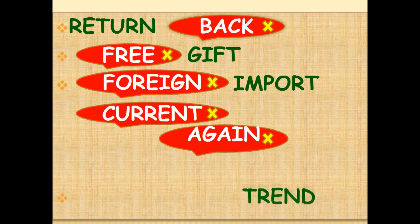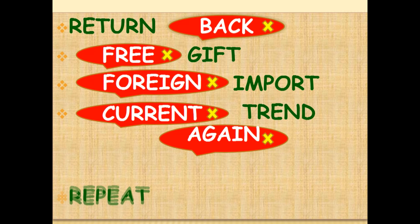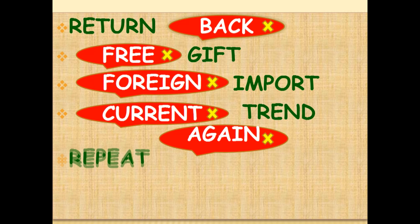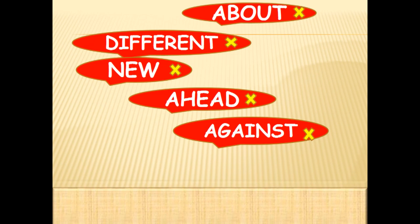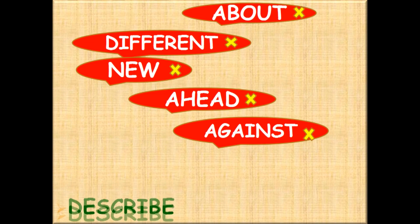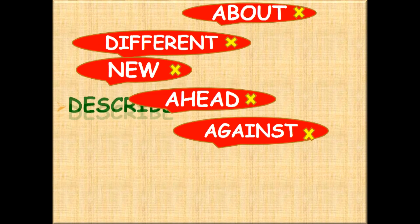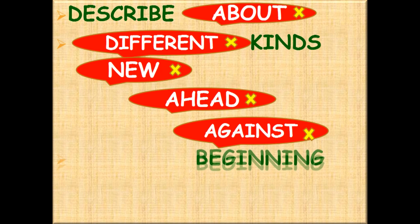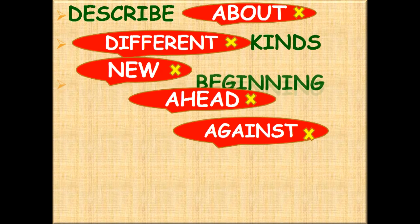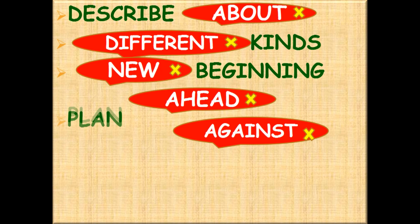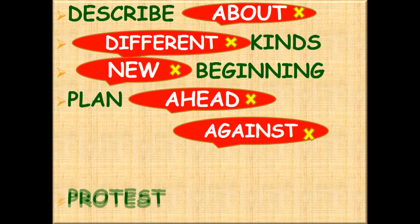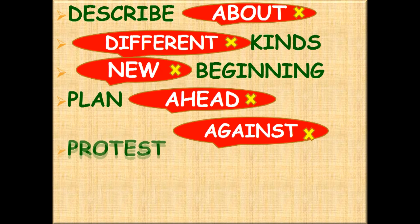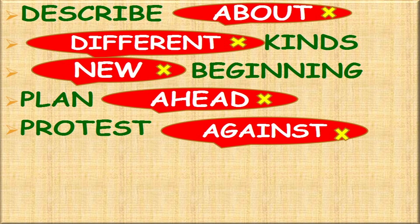More redundant word pairs: 'foreign import,' 'current trend,' 'repeat again,' 'describe about,' 'discuss about' — these are very commonly committed mistakes and should be avoided. Also: 'different kinds,' 'new beginning,' 'plan ahead,' and 'protest against.'